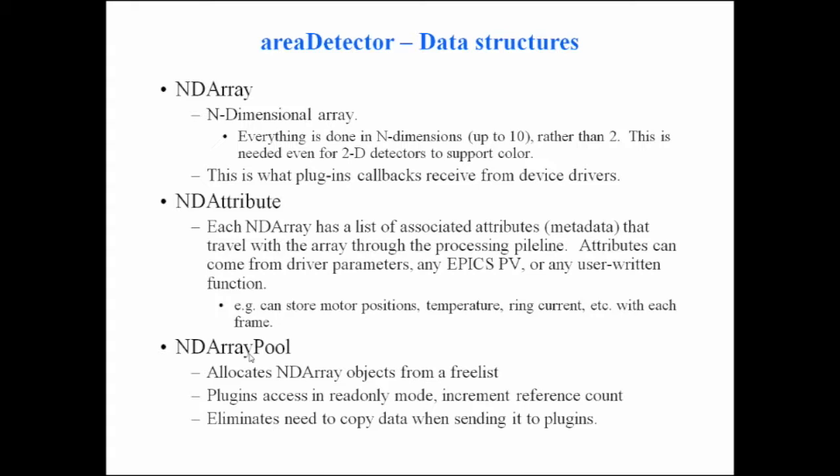You only get the copy penalty if you need to modify the array. Every time a plugin gets an array, a reference count is incremented; when the plugin is done, it's decremented, and once the reference count goes to zero it's put back in the pool. The advantage is there's not a lot of memory allocation — it gets allocated once, and as long as the driver allocates one big enough from the pool, it doesn't need to reallocate memory, which speeds things up.